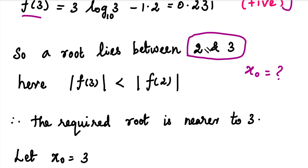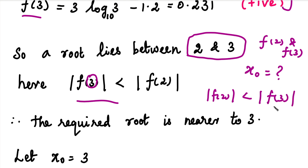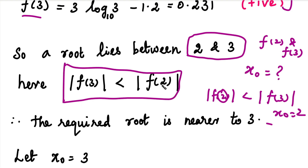These two values are the function values, that is f(2) and f(3). We look at the modulus values. Since |f(3)| < |f(2)|, we assume the root is closer to 3. So we choose x0 = 3.